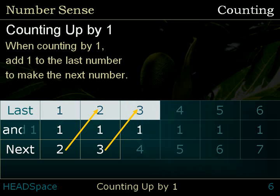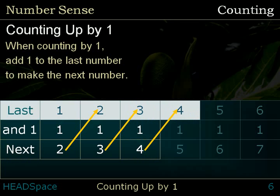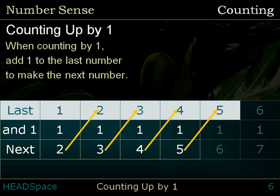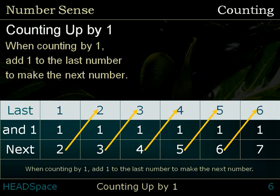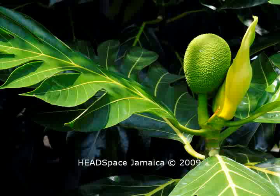Three and one, next number four. Last number four and one, next number five. Last number five and one, next number six. Last number six and one, next number seven. When counting by one, add one to the last number to make the next number. Excellent!